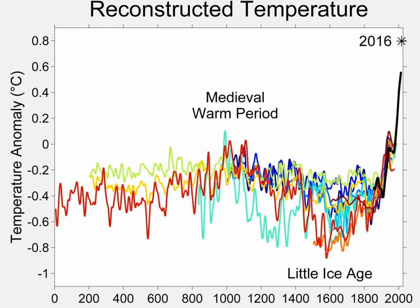Proxy measurements can be used to reconstruct the temperature record before the historical period. Quantities such as tree ring widths, coral growth, isotope variations in ice cores, ocean and lake sediments, cave deposits, fossils, ice cores, borehole temperatures, and glacier length records are correlated with climatic fluctuations.